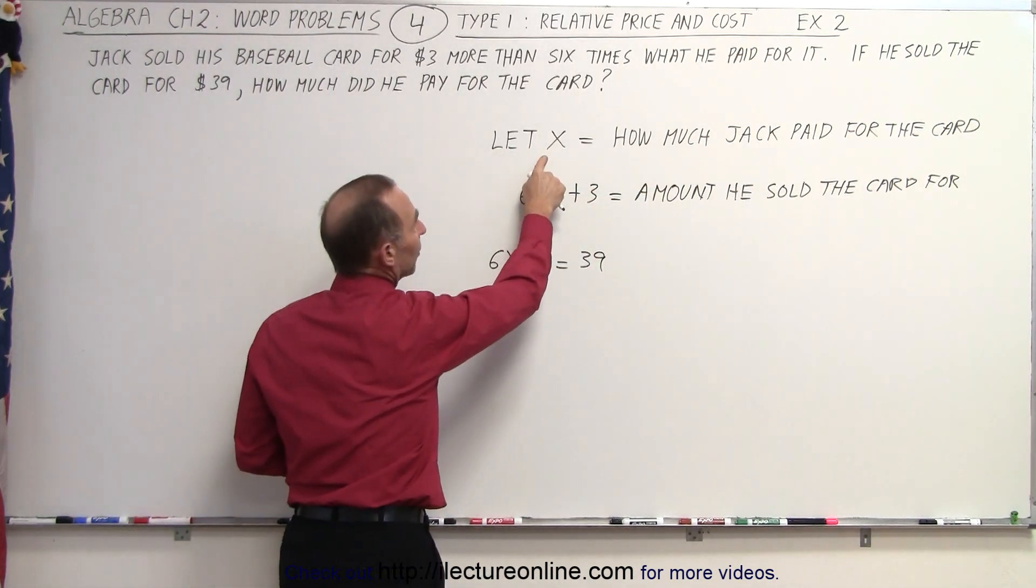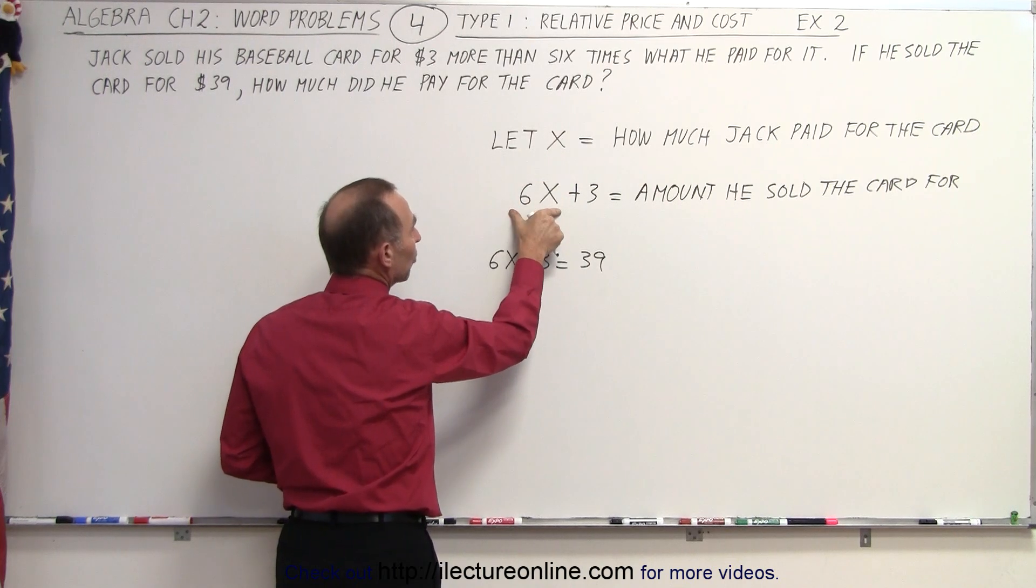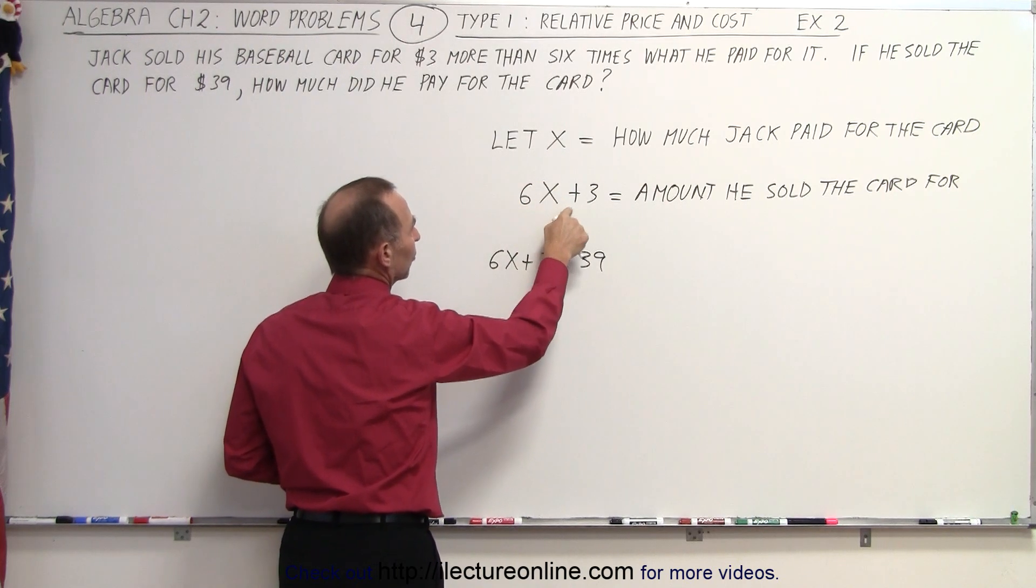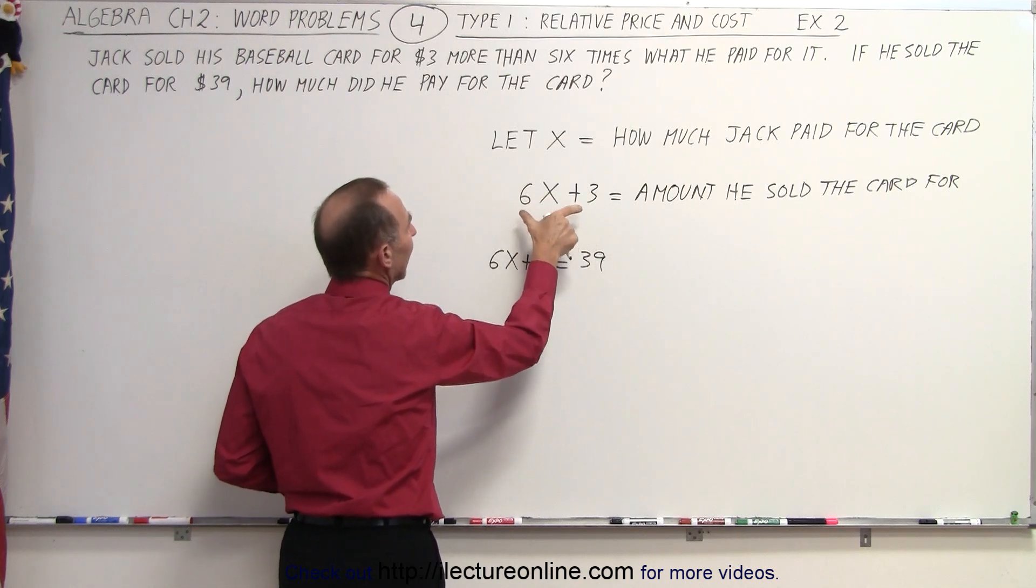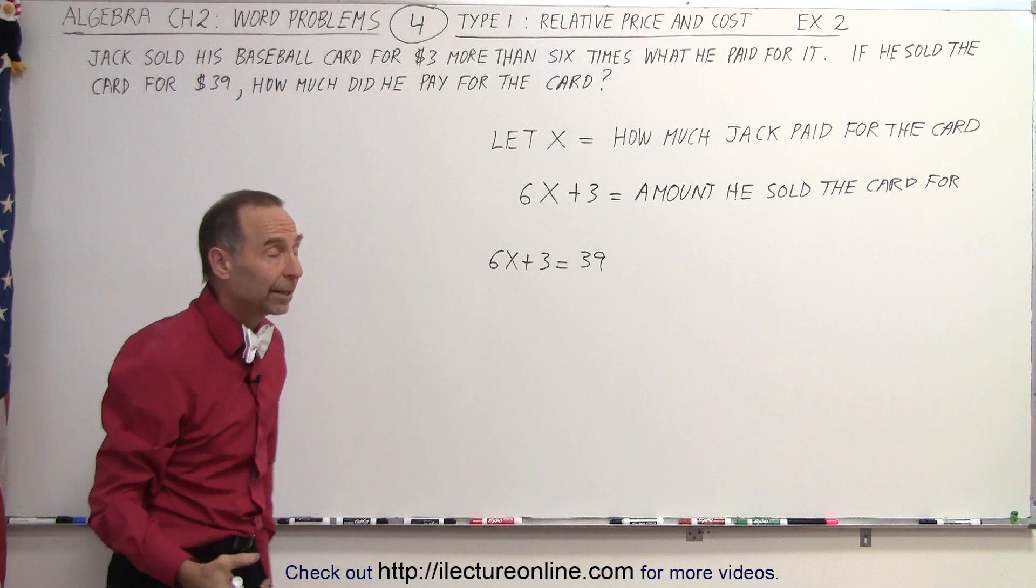We let X equal how much he paid for it. 6X is six times as much what he paid for it. 6X plus 3 is $3 more than six times what he paid for it, and that equals the price he sold it for, which is $39.